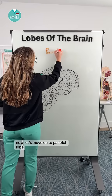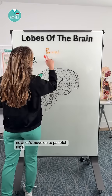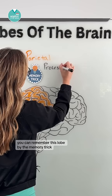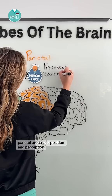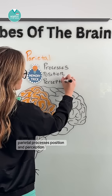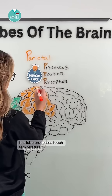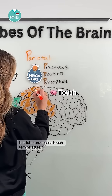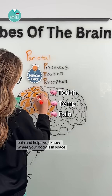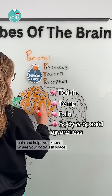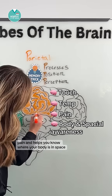Now let's move on to the parietal lobe. You can remember this lobe by the memory trick: parietal — think 'processes position and perception.' This lobe processes touch, temperature, and pain, and helps you know where your body is in space.